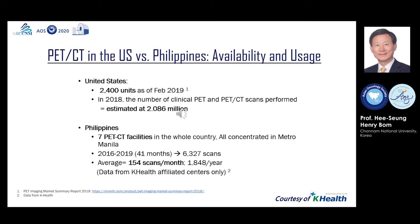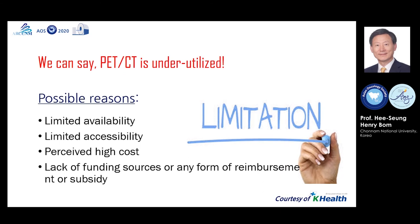K-Health in Manila, Philippines kindly provided this information. This shows the availability and usage of PET-CT in the United States and Philippines. There are 2,400 PET-CT units in the U.S. as of February 2019. The number of clinical PET and PET-CT scans performed in 2018 was estimated at 2.086 million. In the Philippines, there are 7 PET-CT sites in Metro Manila. The total number of PET-CT scans from 2016 to 2019 was 6,327 on average — approximately 1,845 scans per month. We may say that PET-CT is underutilized in many developing countries.